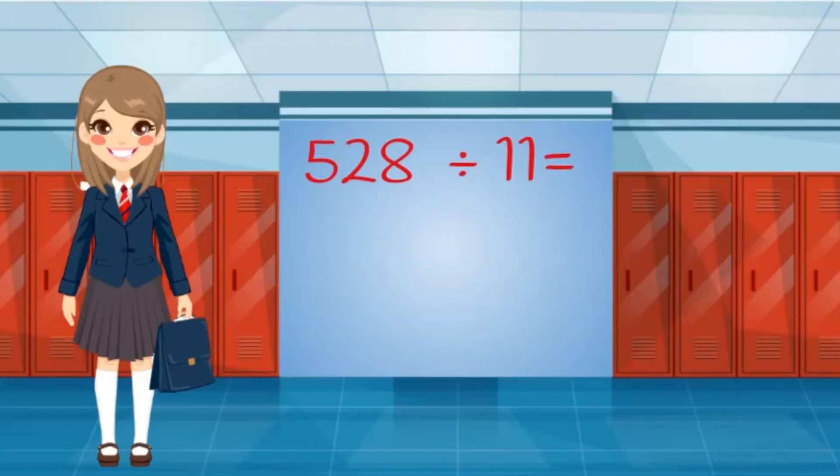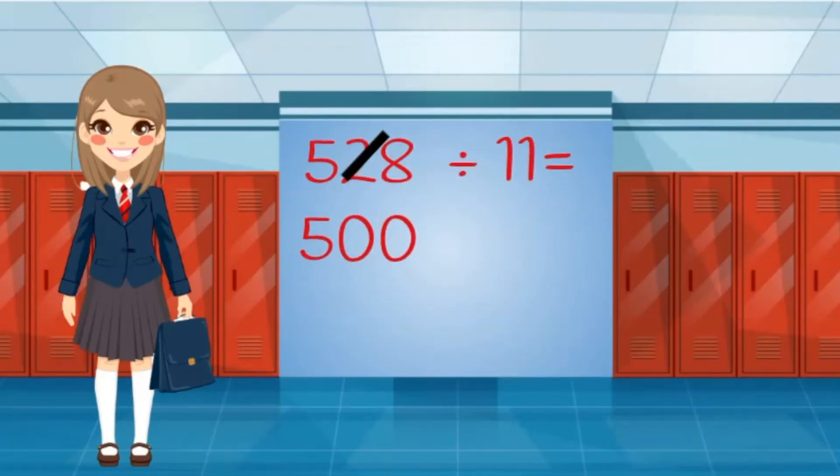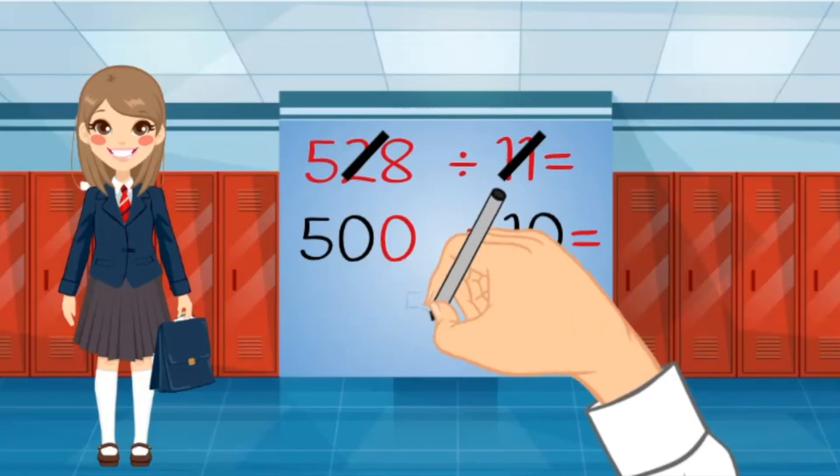I will estimate to make the division easier. 528 is close to 500. If I round 11 to 10, it will make finding the quotient easier. I know 50 divided by 10 equals 5, then I just add the other zero to the quotient.